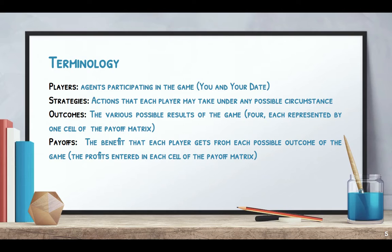Here's some terminology we really need to know. Players are the agents participating in the game — in this case, you and your friend. Strategies are the actions each player may take under any possible circumstance. Outcomes are the various possible results of the game, represented in a cell in the payoff matrix. And payoffs are the benefits each player gets from each possible outcome — representing staying quiet versus confessing and what the possibilities are.